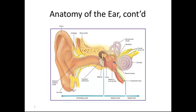There are three main bones in the middle ear: the malleus, incus, and stapes. This then moves into the inner ear, which consists of the semicircular canals, the vestibule, and the cochlea.